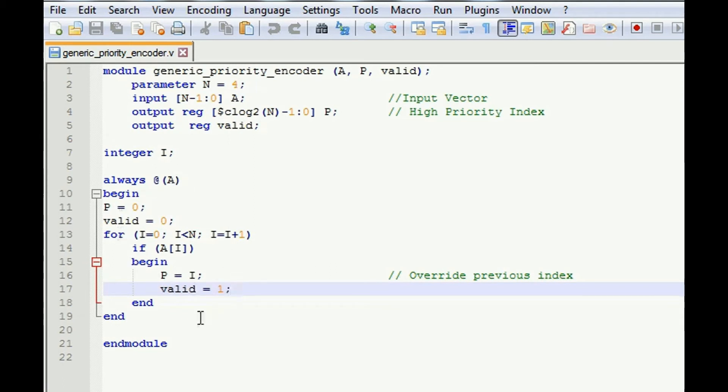And this is a combinational logic. If none of the bit is 1, then P will be 0 and valid will be 0. So we have to specify this condition.